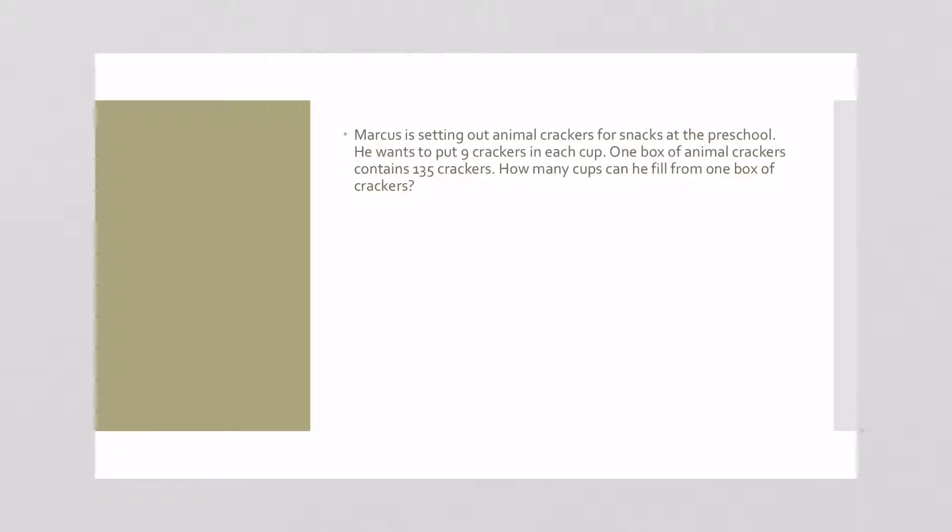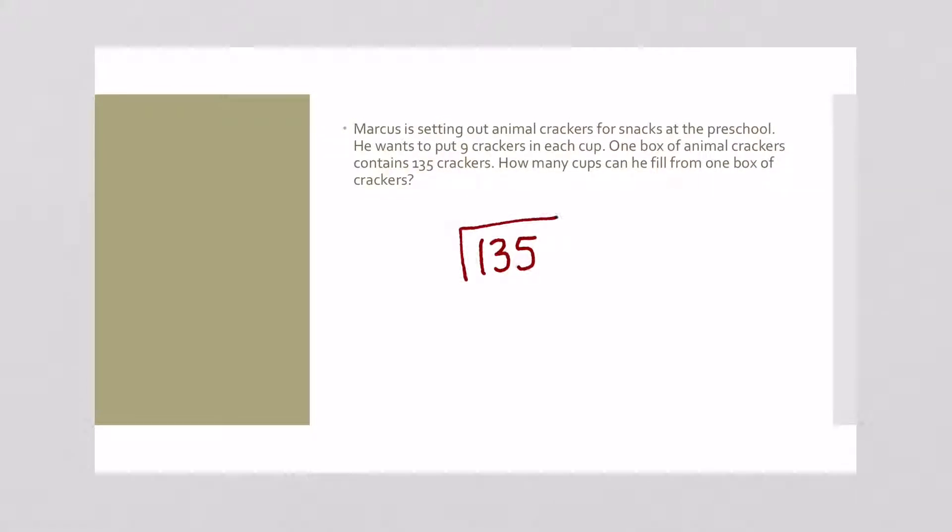Marcus is setting out animal crackers for snacks at the preschool. He wants to put 9 crackers in each cup. One box of animal crackers has 135 crackers. How many cups can he fill from one box of crackers? Well in this case we would do 135 divided by 9.